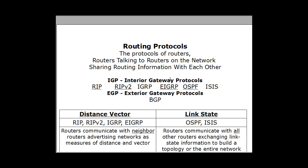There are two types: IGP and EGP, or Interior Gateway Protocols and Exterior Gateway Protocols. Interior Gateway Protocols include routing protocols such as RIP, RIP version 2, IGRP, EIGRP, OSPF, and ISIS. In the Cisco CCNA, you're required to know how to configure RIP, RIP version 2, EIGRP, and OSPF. IGRP has been succeeded by EIGRP and is no longer being taught.